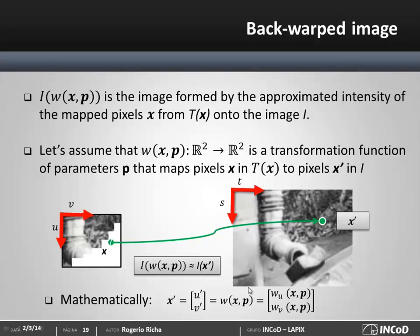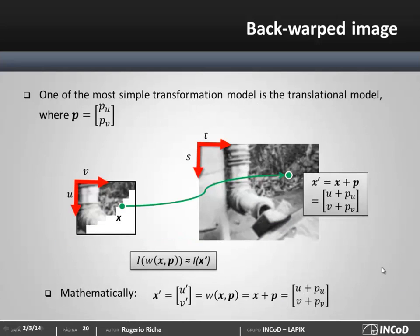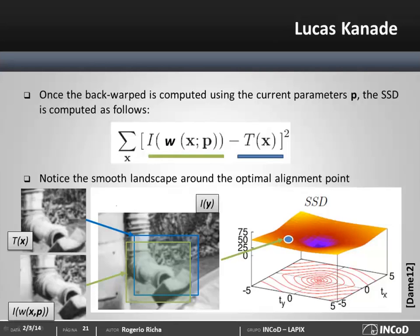Notice that w is actually composed of two functions: one for the vertical and another for the horizontal components of x. For instance, in the case of a translational model — one of the most simple transformation models — the function w is a simple sum, where we add the horizontal and vertical components by two offsets. Now that we have computed the back-warped image, we can measure its similarity with the reference image T.